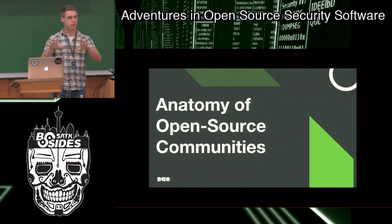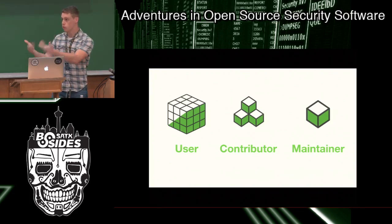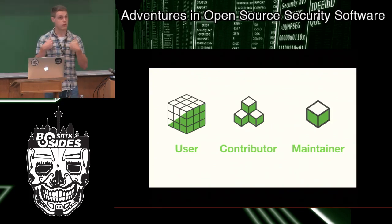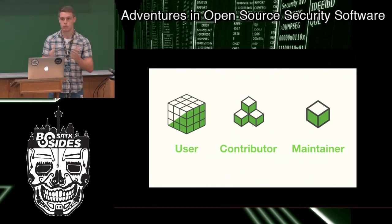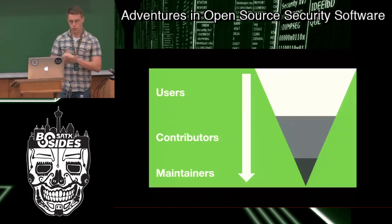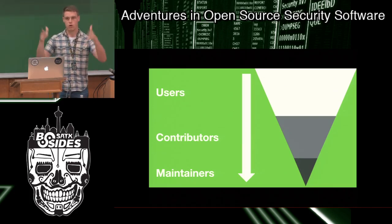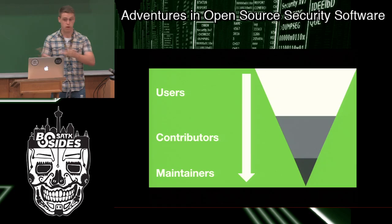Now let's talk about the anatomy of an open source community. What does it actually look like when you're building one of these out? There are really three roles you can play. You can be a user of the software — create issues, create feature requests, give feedback. You have contributors, which are actively committing code and committing ideas of how something could be implemented. And then you have maintainers — they're the architects and stewards of the project. They make decisions, merge in requests, and control the code and the direction for the project. You're going to have a lot more users than you do contributors by far.